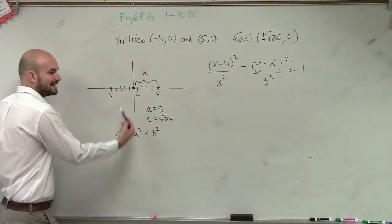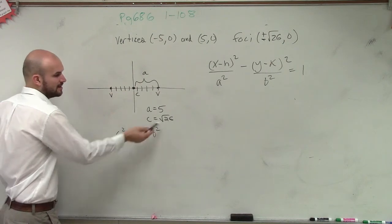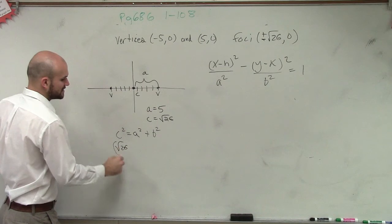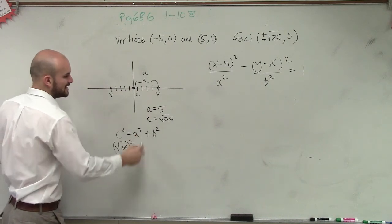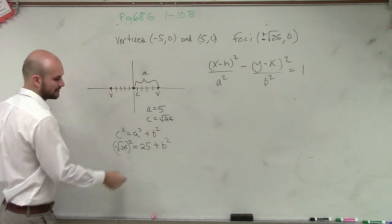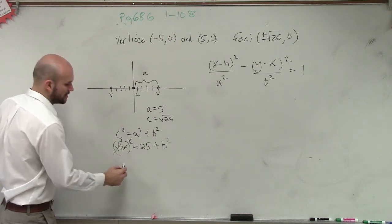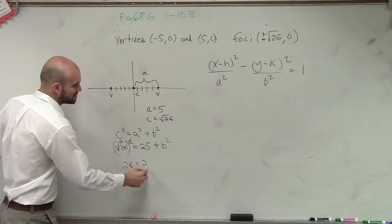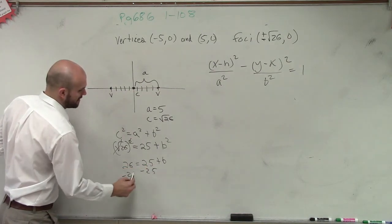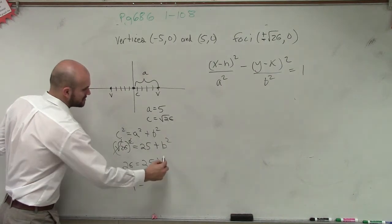So therefore, I need to figure out what b squared is, right? So I plug in c, so that would be the square root of 26 squared equals a squared, which is 25, plus b squared. Well, the square root of 26 squared gives you 26 equals 25 plus b, minus 25 minus 25. 1 equals, sorry, b squared.